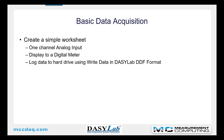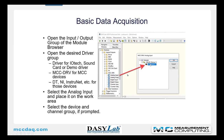We're going to create a simple worksheet with a one-channel analog input displayed to a digital meter, and then log data to the hard drive using the write data module in DAISY Lab DDF format. The first step is to open the input-output group of the module browser, then open the desired driver group. You can use the IOTech sound card or demo driver, the measurement computing MCCDRV driver, or any other driver that you have configured. Select the analog input and place it onto the work area. Select the device and channel group if prompted. I'll show you a quick animation of how that works.